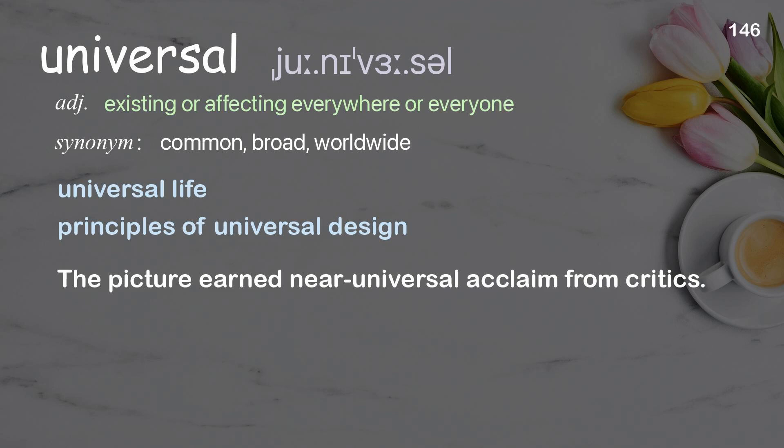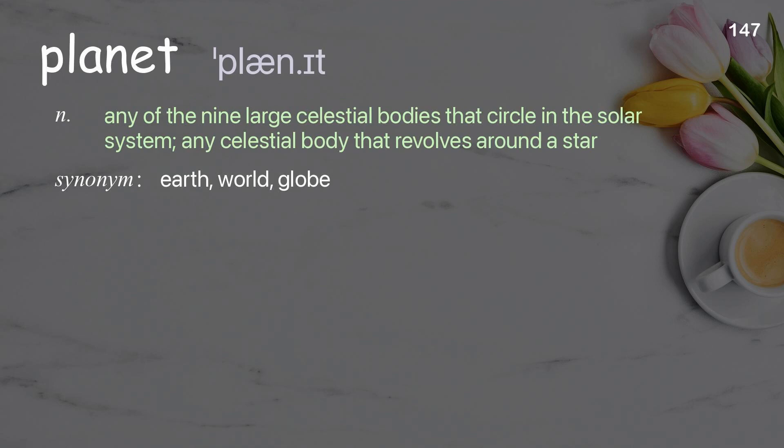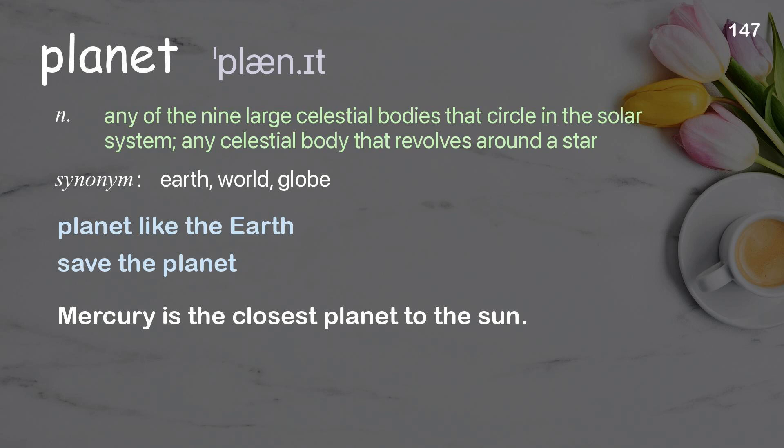Planet: any of the large celestial bodies that circle in the solar system; any celestial body that revolves around a star. Examples: planet like the earth, save the planet. Mercury is the closest planet to the sun.